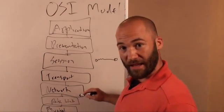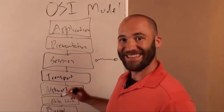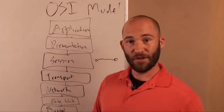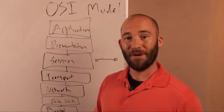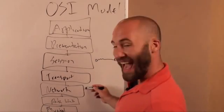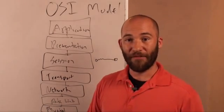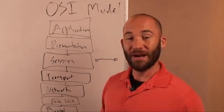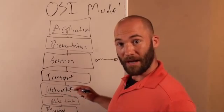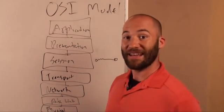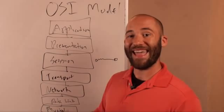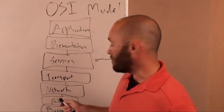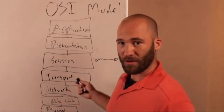Above the data link layer is the network layer. This is where things like IP addresses reside. Anything you do with the TCP/IP protocol with IP addresses, all of that happens at the network layer. If you put in the wrong IP address and can't get to where you want to go, that is a network layer problem. If the router dies, that is a network layer problem. Anything that involves your IP address would be a network layer problem.